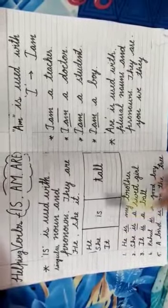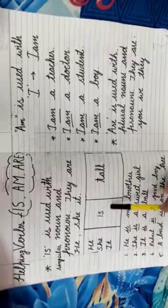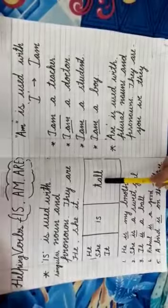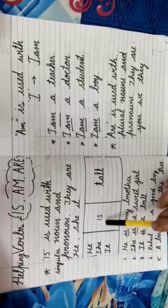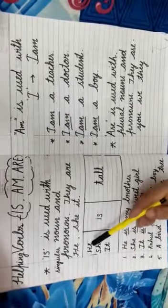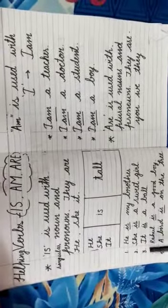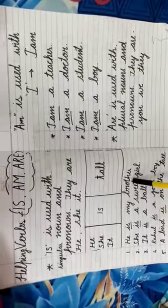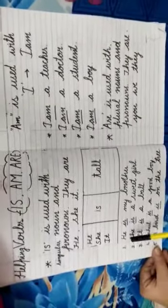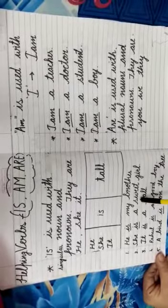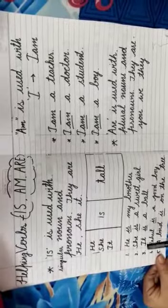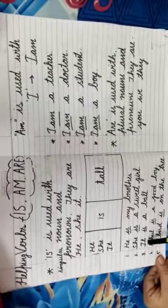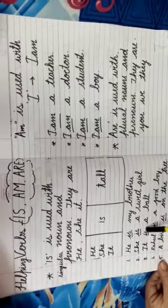Now let's see and make a small sentence using this. He is tall. She is tall. It is tall. So what you learned from here? That is is always used with he, she, it and they are singular. Now let's do some more examples. He is a singular pronoun. He is my brother. Is is used with he. She is a sweet girl. Is is used with she. It is a ball. Is is used with it. So they are singular pronouns, and with singular pronouns we use is.